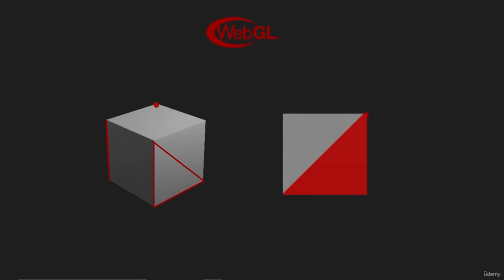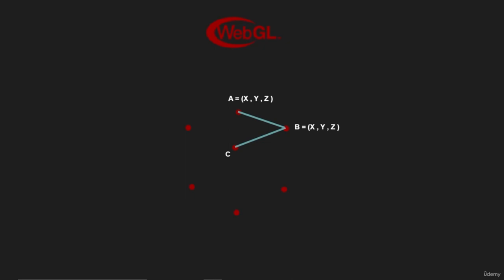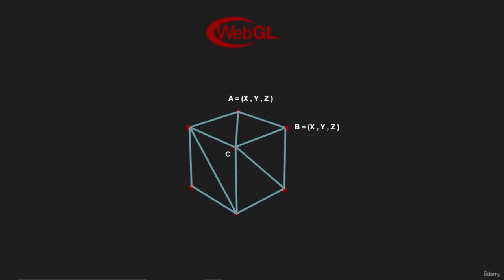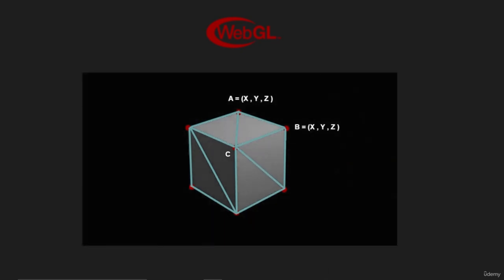Let's explain in more detail. When you want to use WebGL without any frameworks, you need to manually specify each point location in the 3D space. For example, I want to create the first point with location XYZ, then second and third points, until I finish distributing all the points to form the required model. Then I have to draw a line between A and B, between B and C, and between C and A — so I have my first triangle. I form another triangle and another one until I finish the model. The next step is to give each point a specific color, for example a gray color, until I finish all the points.